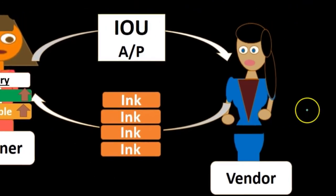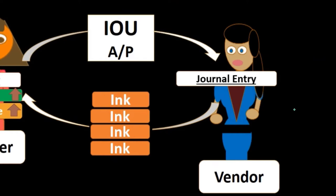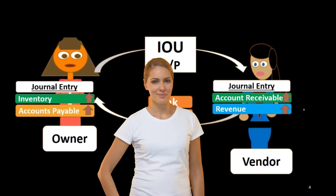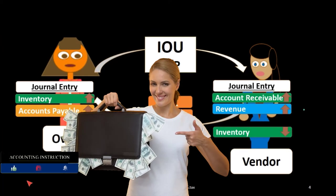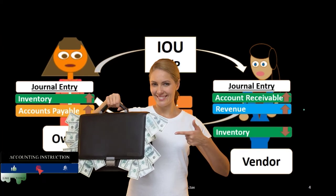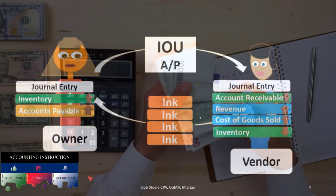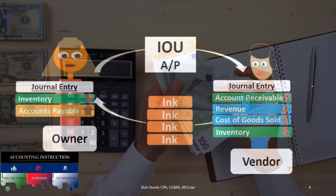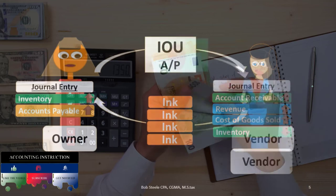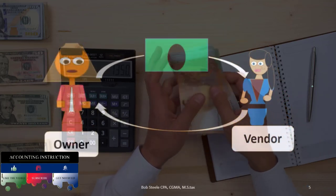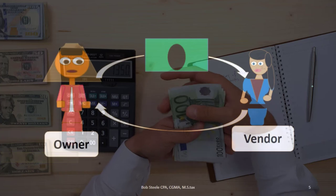On the vendor's side, the transaction is also recorded at this point. They have done the work, so they record a receivable due from the owner and recognize revenue. They are also decreasing their inventory and should record the related cost of goods sold at that point in time.